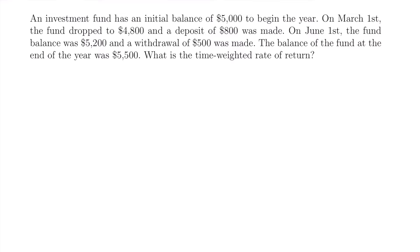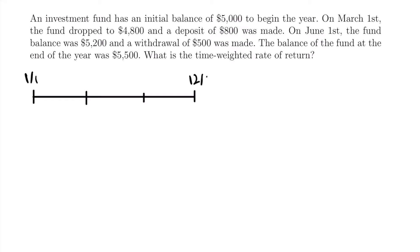We're going to be looking at the beginning of the year where we have an initial balance, and the end of the year where we have an ending balance. That's already two moments in time. We are told of two other moments in time — March 1st and June 1st — where we have reported balances for the fund as well as some cash flows. So our timeline will have two endpoints and two points in between: January 1st and December 31st, with March 1st and June 1st in the middle.